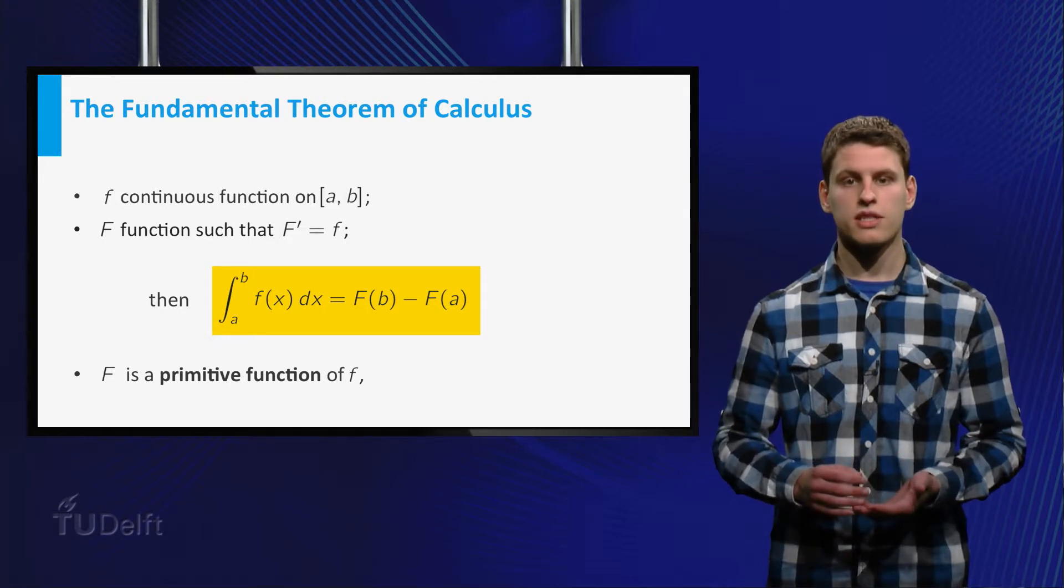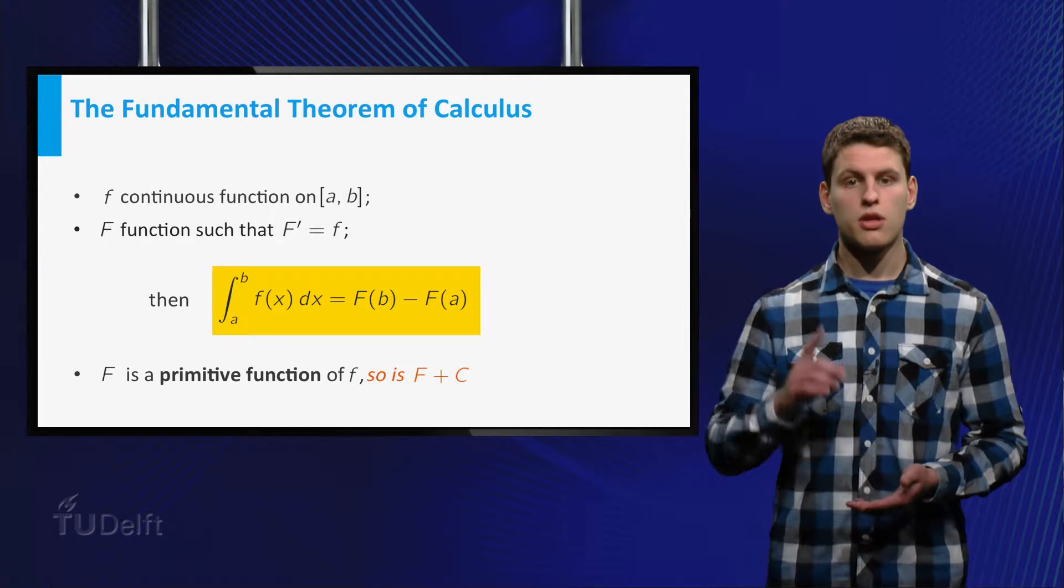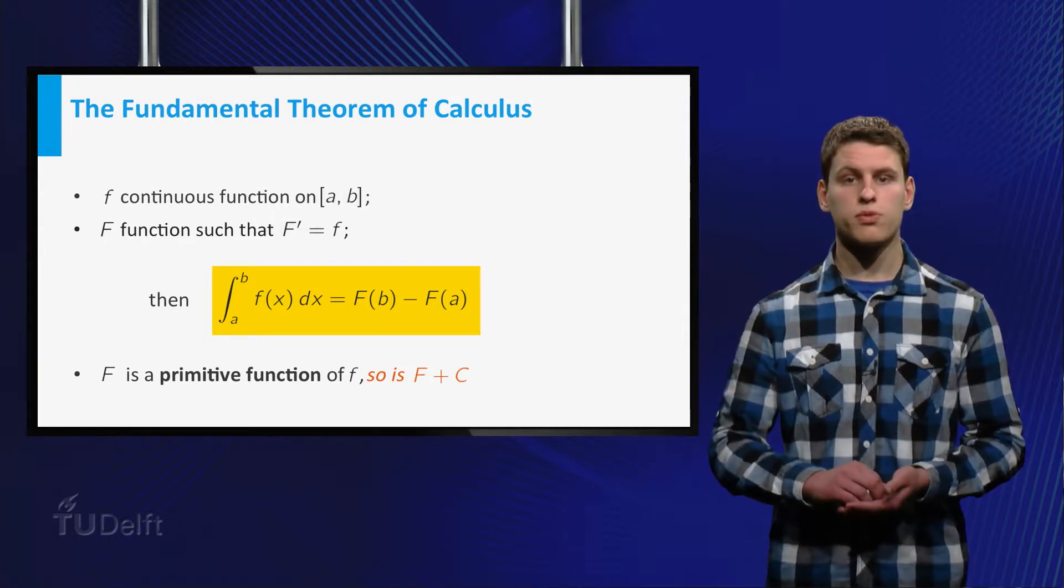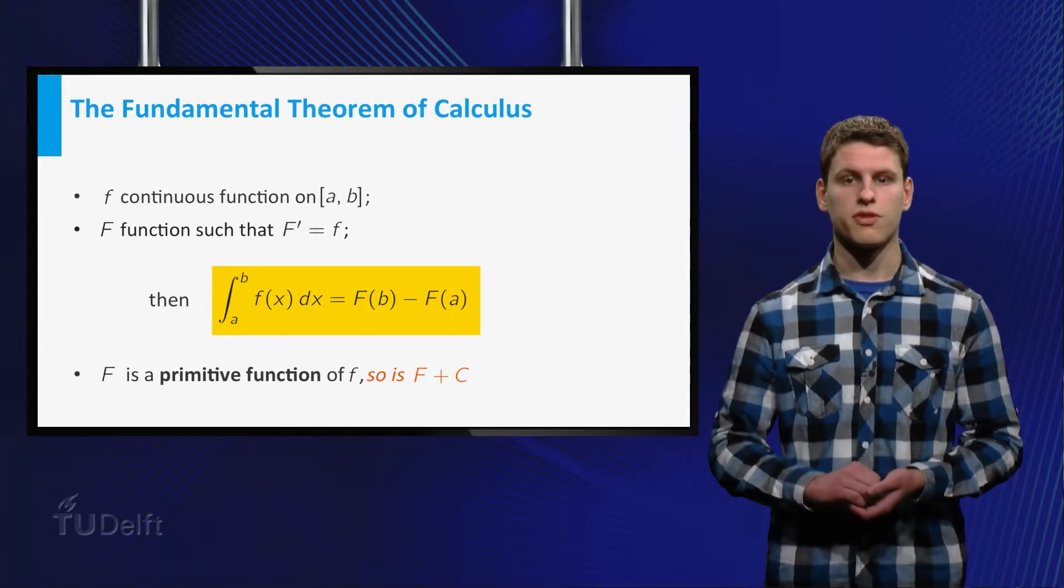This function capital F is called a primitive function of small f. Don't forget that when you find a primitive function capital F, capital F plus any constant is also a primitive function of small f.